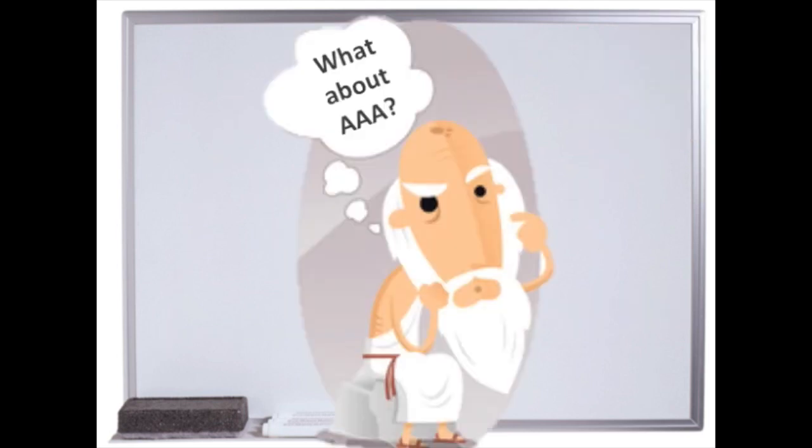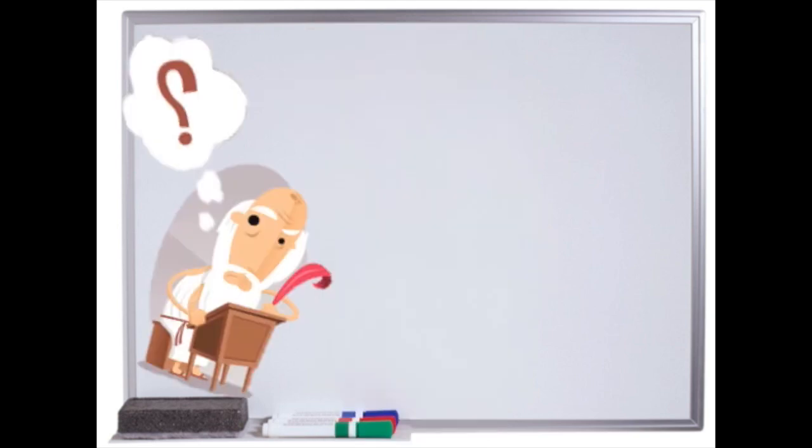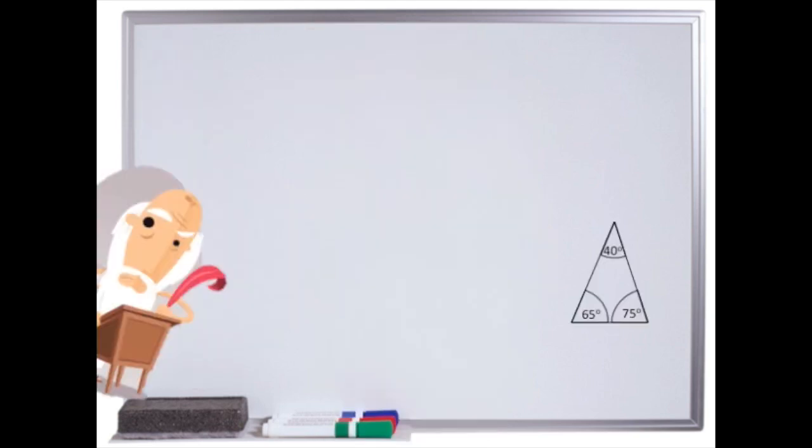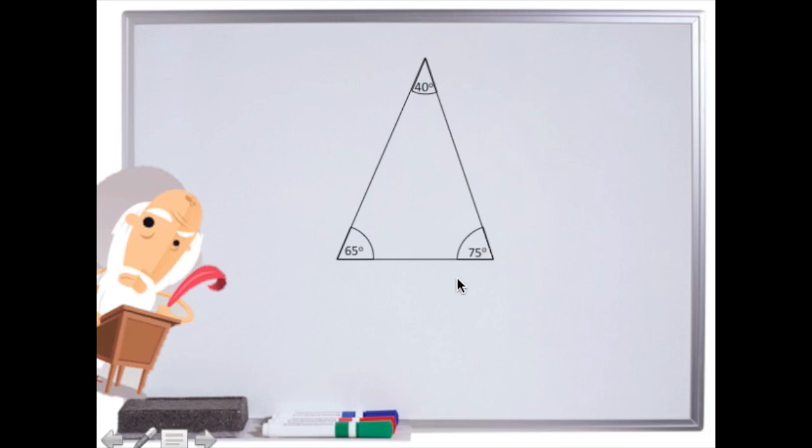Oh, you want to know why angle, angle, angle doesn't work? I'll take that as a yes. Well, if we look at this triangle here, we can see that this angle here is 40 degrees. This one here is 75 degrees. And this one here is 65 degrees. And we can see this triangle here, this angle is 75, this one is 40 and this one is 65.